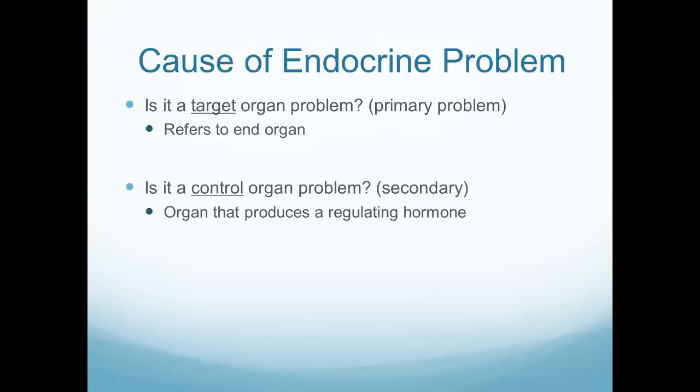Endocrine problems can come from two areas: a primary problem refers to the target or end organ - for example, the thyroid. Or it can be a control organ problem - with the thyroid, that would be the hypothalamus or pituitary, called a secondary endocrine problem. To determine which is causing the problem, we look at T3 and T4 levels for the target organ, and TSH levels to assess the control organ. The pituitary making TSH tells the thyroid to make more or less T3 and T4, helping differentiate between the two.